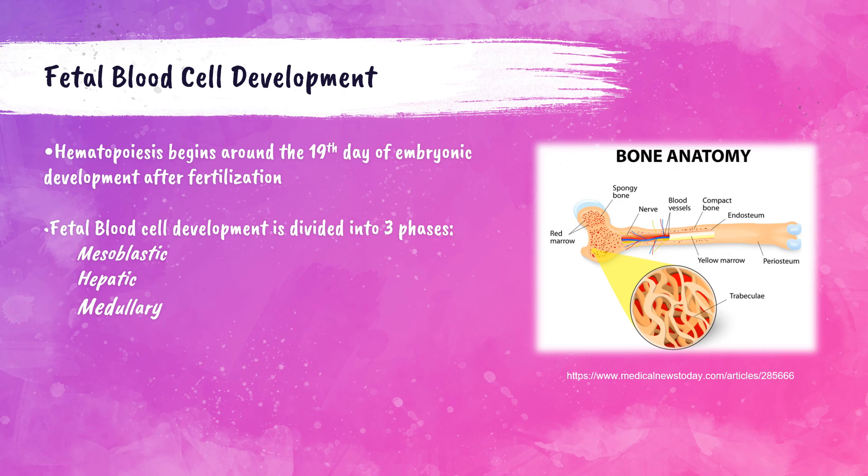Hematopoiesis is the process by which the body produces blood cells and plasma. It's a lifelong process of continuous formation and turnover of blood cells to meet everyday demands, as well as to respond to increased demand due to injury or infections.